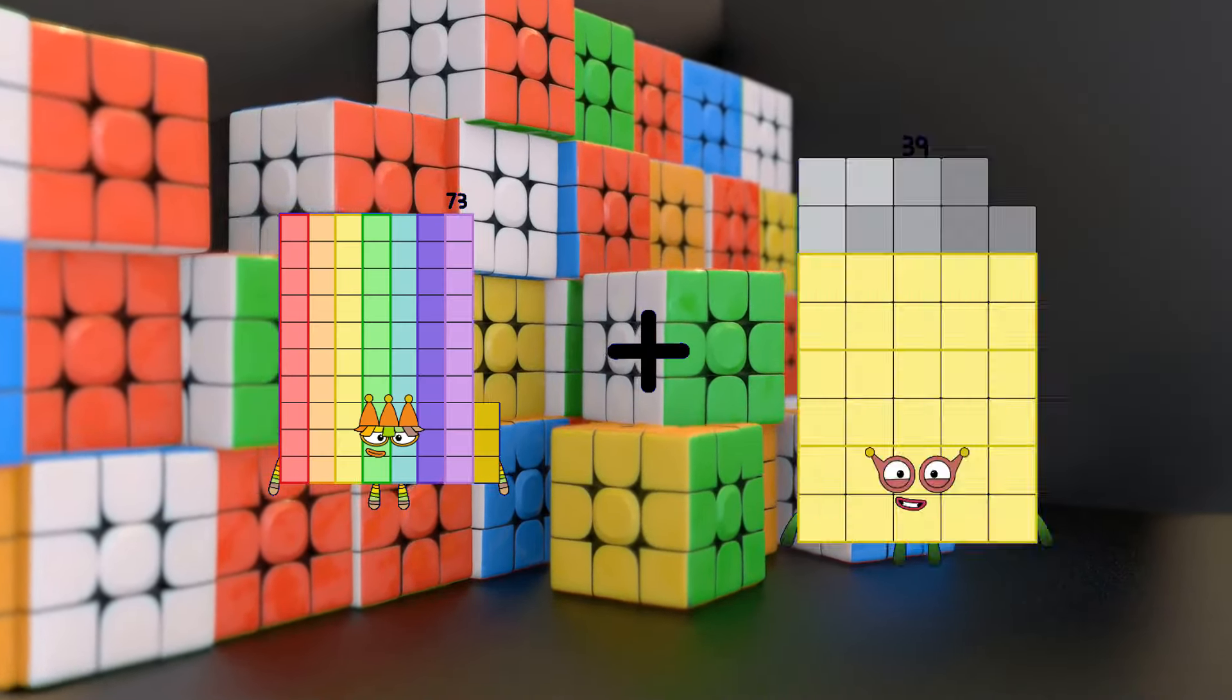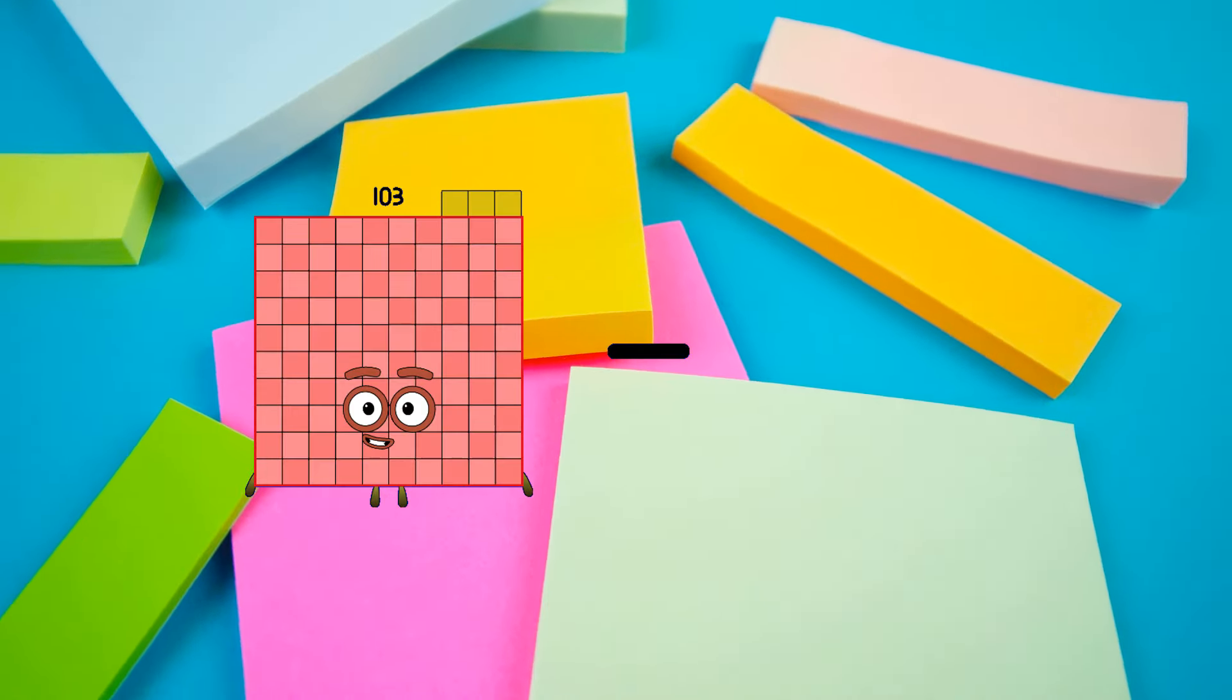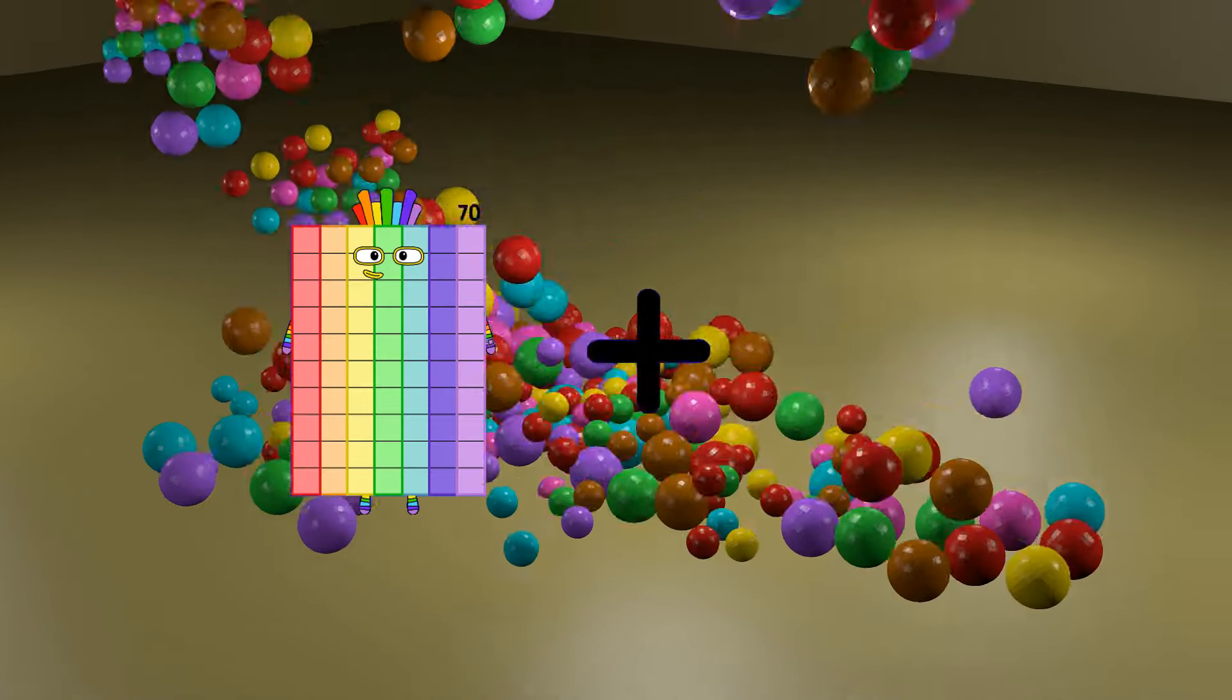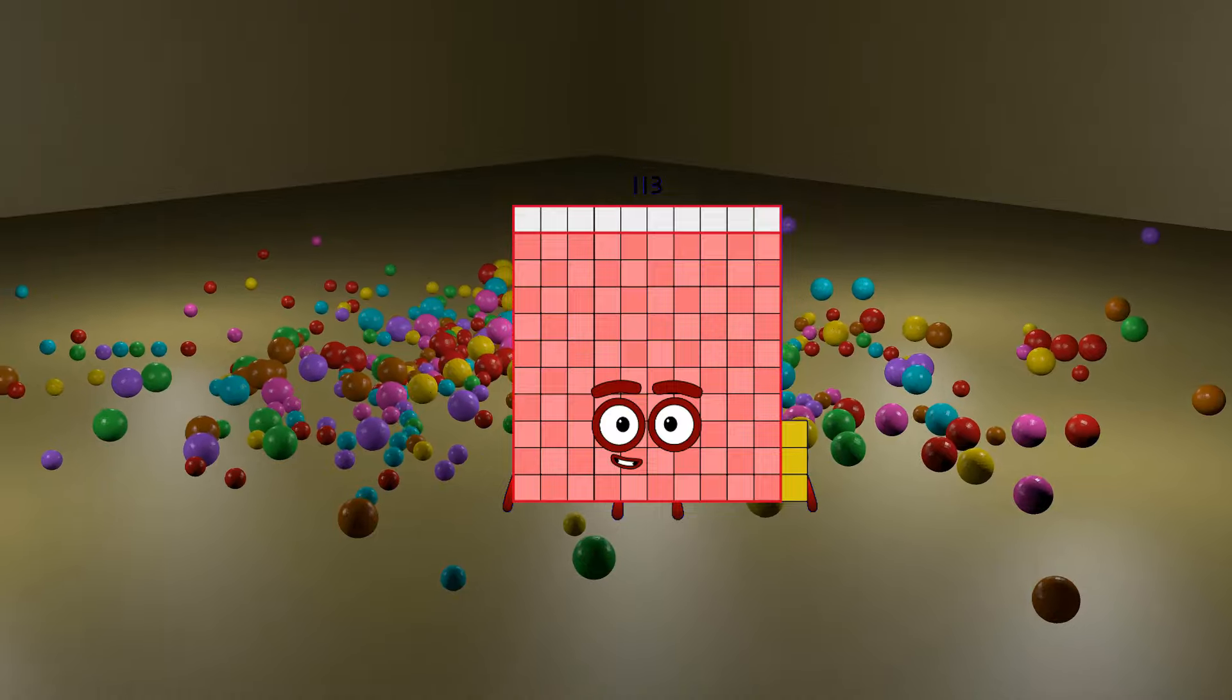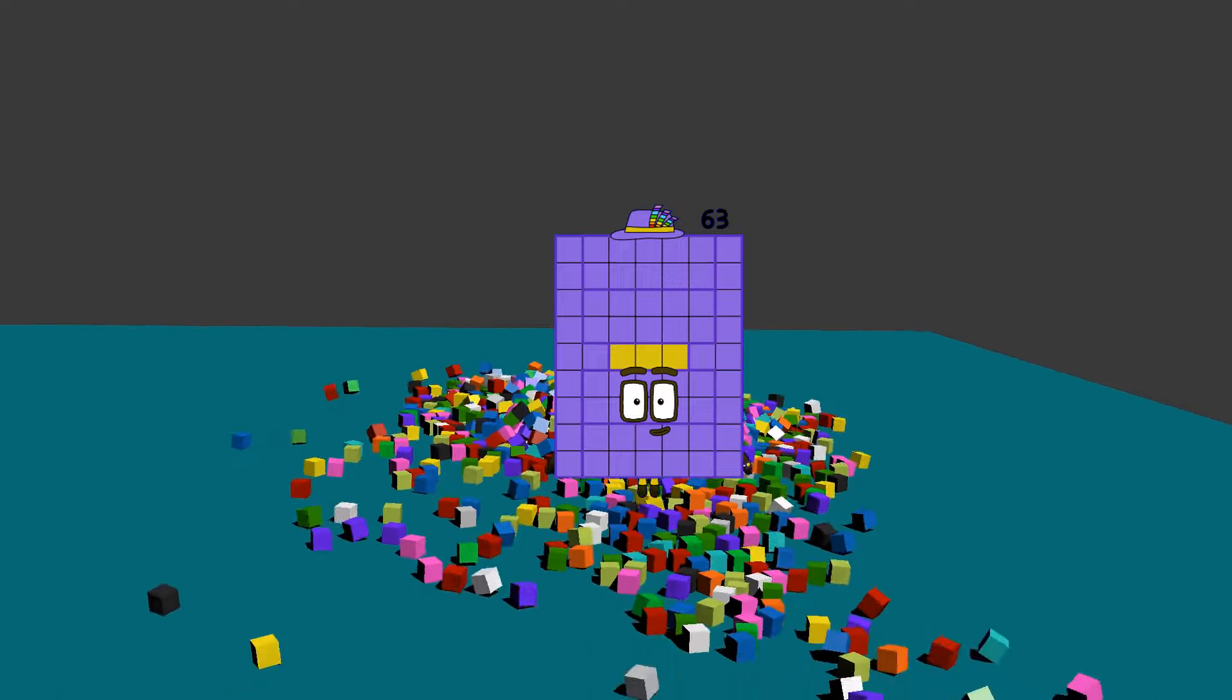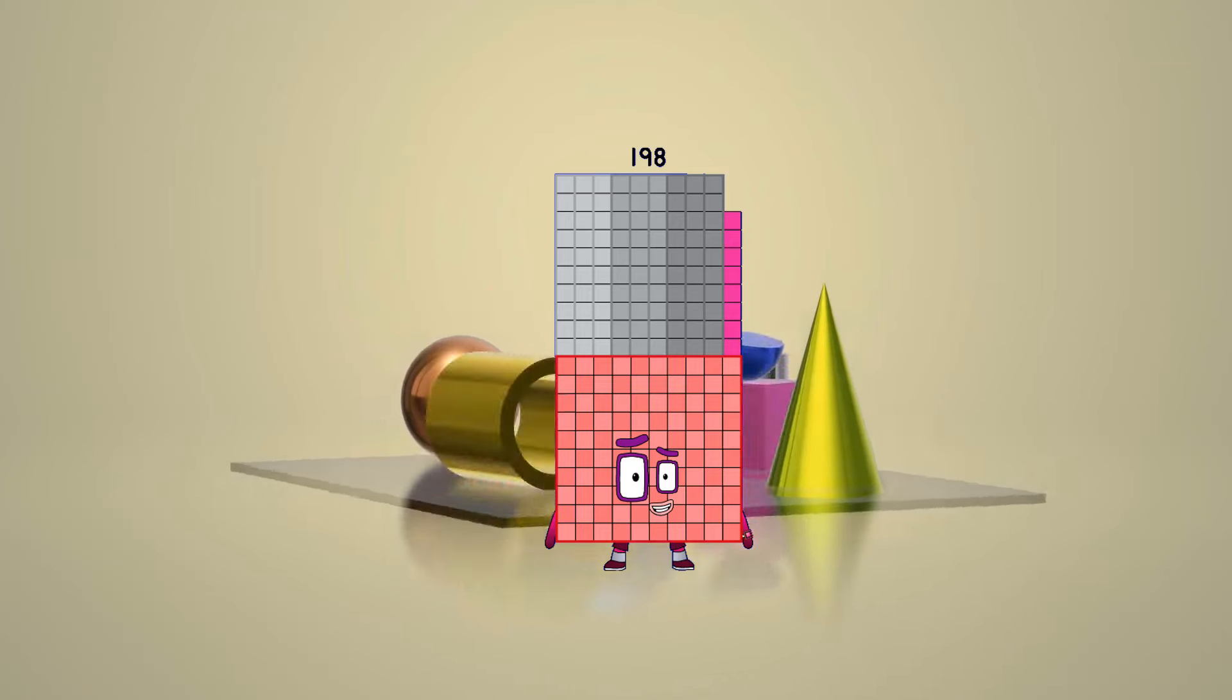73 plus 31 equals 104. 103 minus 103 equals 0. 43 equals 113. Minus 43 equals 53. 91 equals 198.